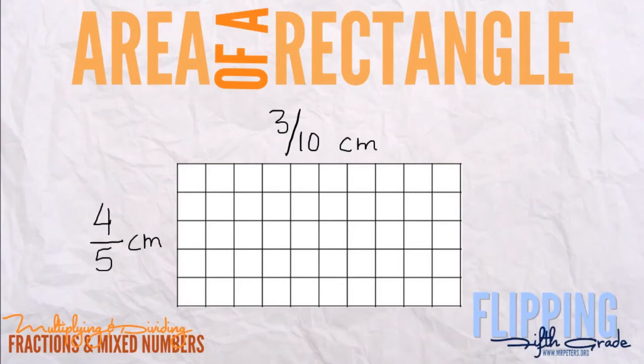On this problem we were asked to illustrate three-tenths centimeters and four-fifths centimeters. So going back to the same problem, you want to keep in mind what we just did. So again, you can only go color in three across and four down. We're going to color in this little area here to illustrate.